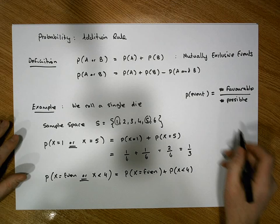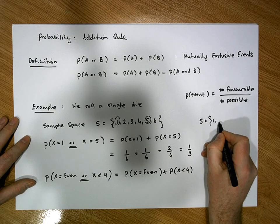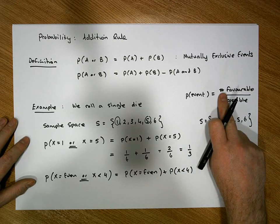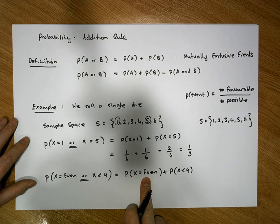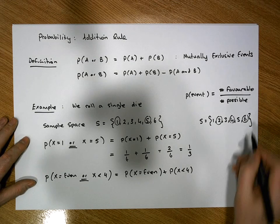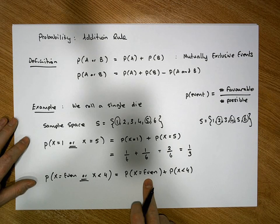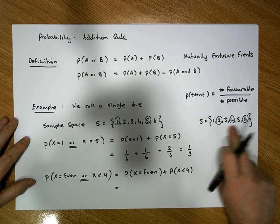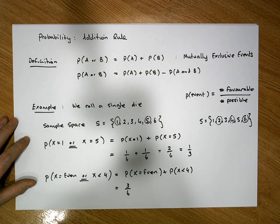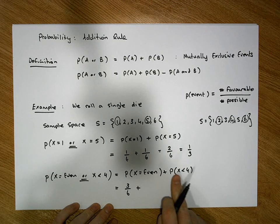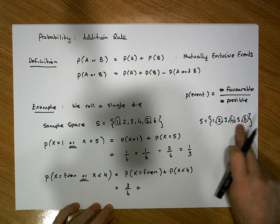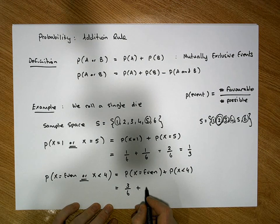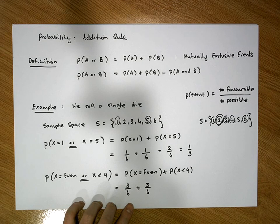Looking at the sample space S = {1, 2, 3, 4, 5, 6}, the probability of an even number: the favorable outcomes are 2, 4, and 6 — three even numbers — so P(even) = 3/6. For the probability of a number less than four, the favorable values are 1, 2, and 3, giving us three possibilities, so P(less than 4) = 3/6.